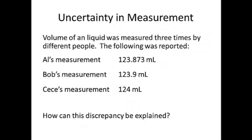Uncertainty measurement. So now let's say that we have three people, Al, Bob, and Cece. They're all measuring the same liquid. They're transferring it from container to container. Let's assume that all that liquid is transferred so there's no additional variable to consider there. Now Al measures it at 123.873. Bob, you can see his measurement, and Cece. Now he has more digits. Why does he have so many more digits than, let's say, Cece does? She only has three digits that are recorded. How can this discrepancy be explained? That's what we're looking at next.